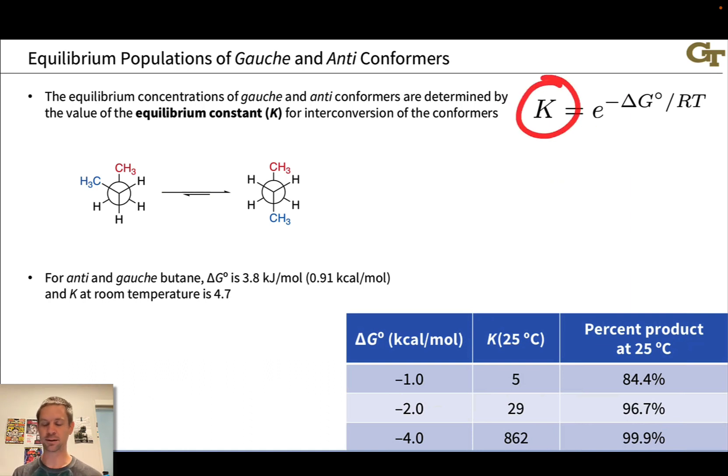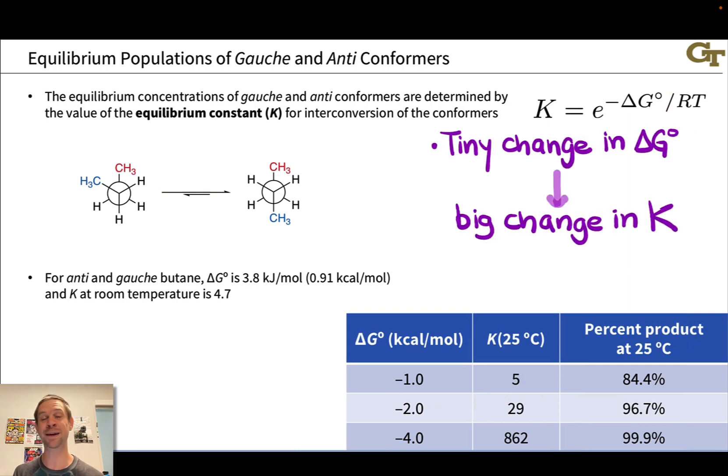The equilibrium constant depends exponentially on the free energy difference between reactants and products. So a tiny change in delta G is going to cause a very big change in K. Exponential growth, essentially, as delta G changes. And this table gives you a sense of that.